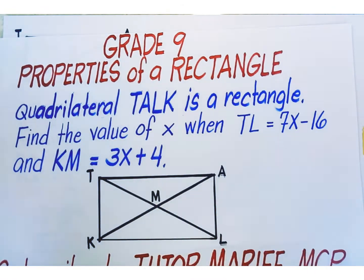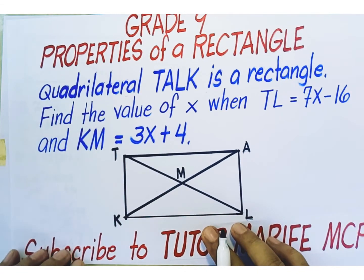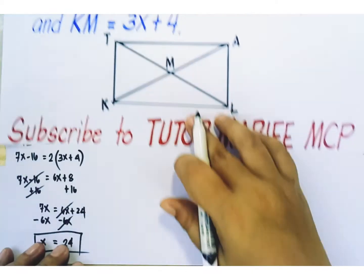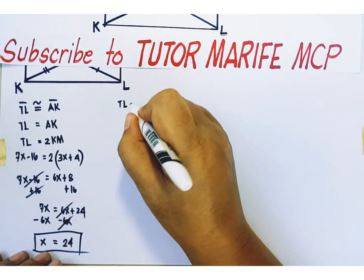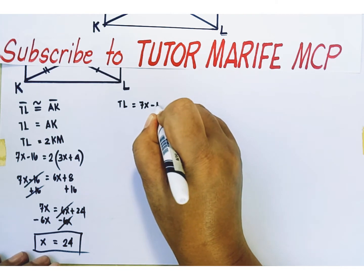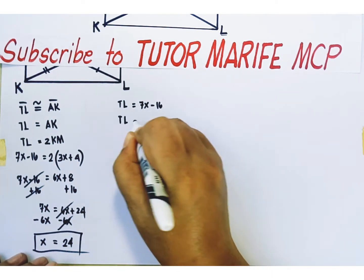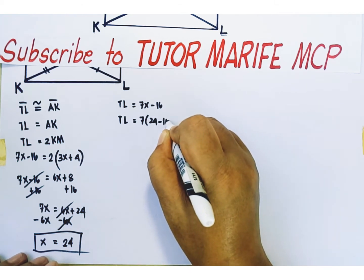Finding the value of x, we're done. x is equal to 24. Let's validate our answer. How about replacing x in the expression 7x minus 16? TL is equal to 7 times 24 minus 16.